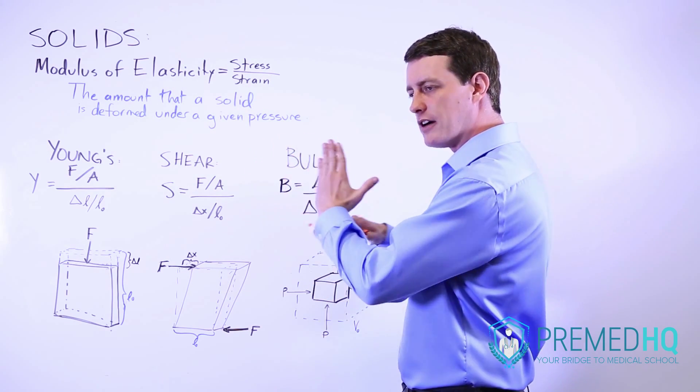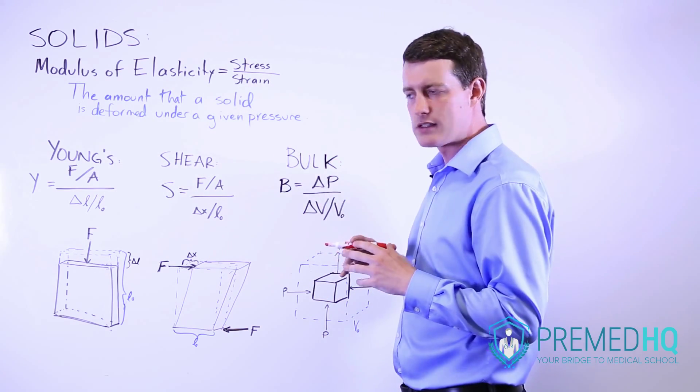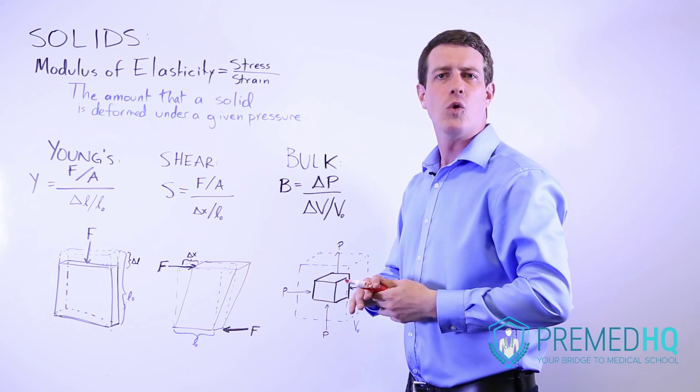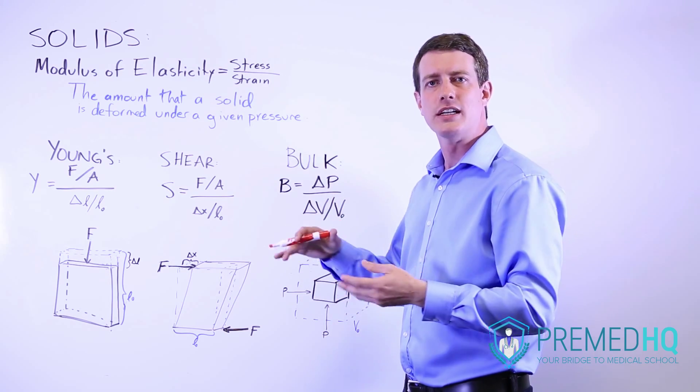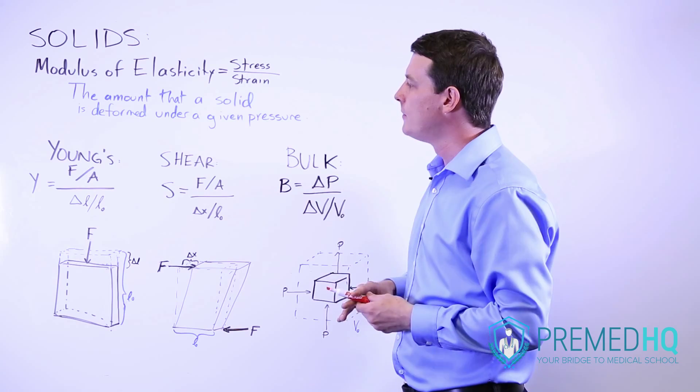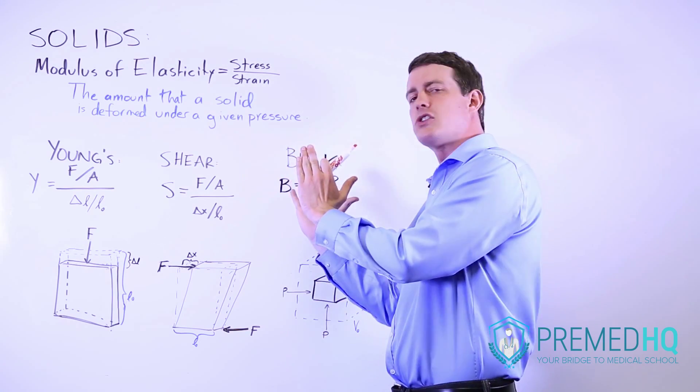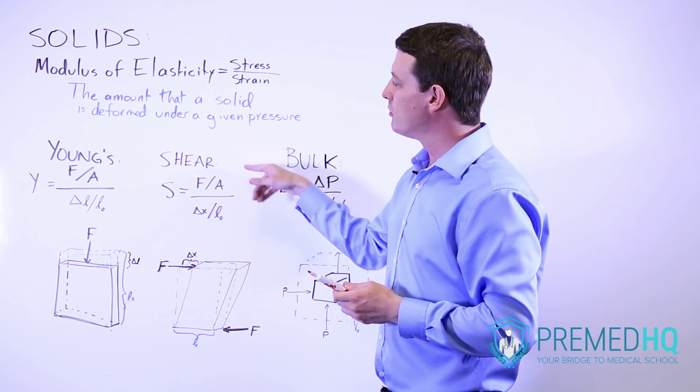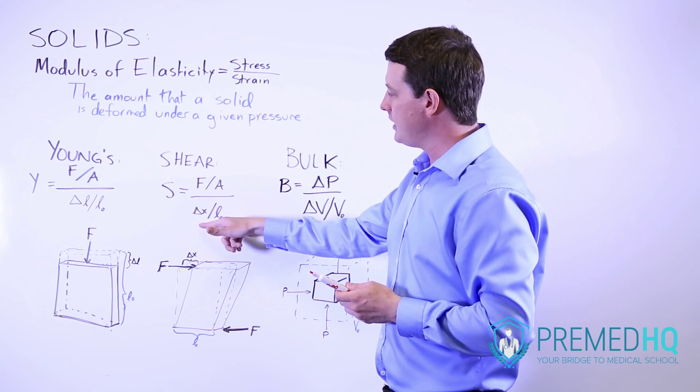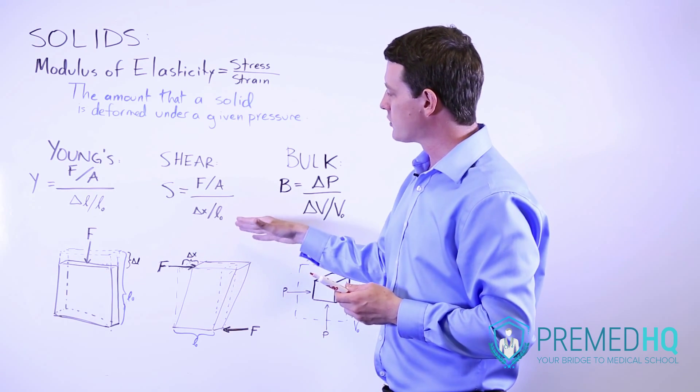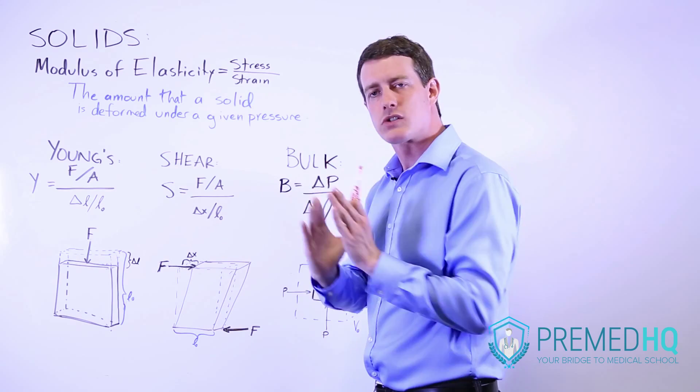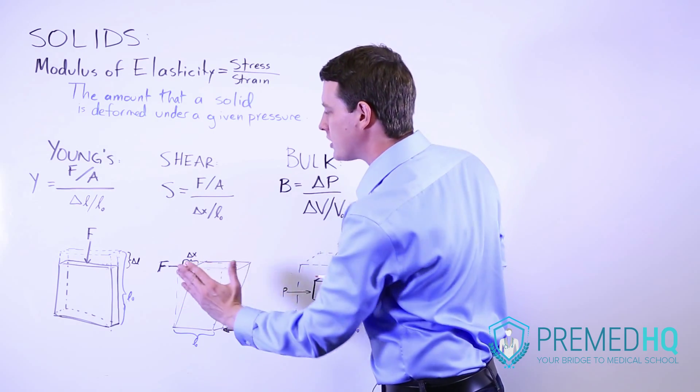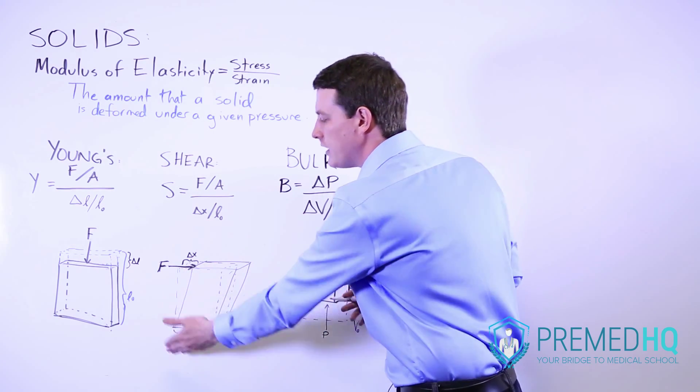The shear modulus is more of a measurement of how much something twists. So whereas Young's you might see with how much a supporting beam can support weight or you might see it used architecturally, shear is a measurement of how much it's going to shift as you apply a force to it. And so once again the numerator here is force over area but the thing that you're looking at as far as strain goes is how much it twists or shears within this dimension relative to its overall length.